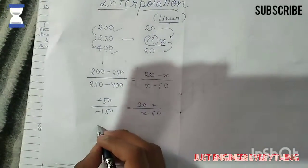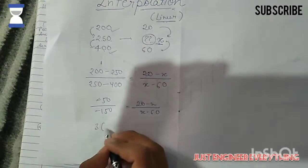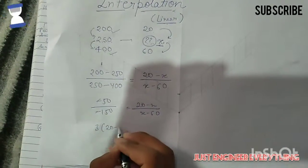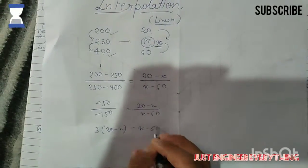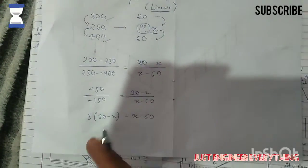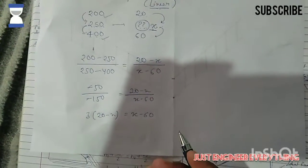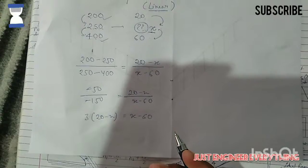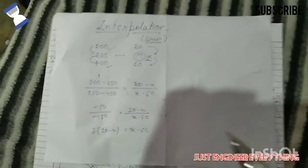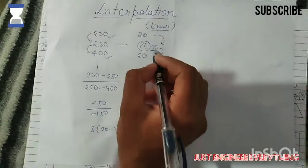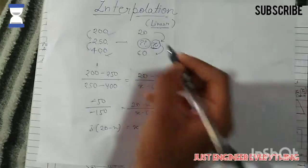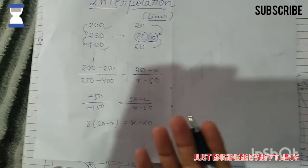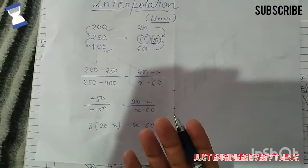Multiply: 3 times (20 minus x) is equal to (x minus 60), and then you can get the x value out easily. So this is a short trick using the line equation. Thank you.